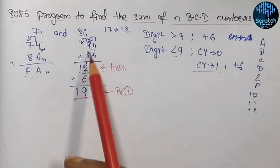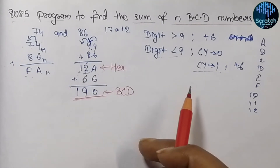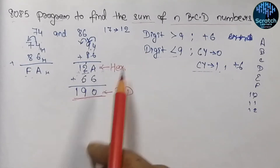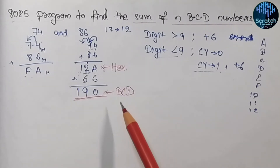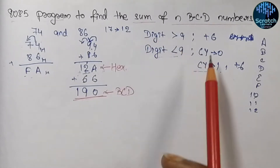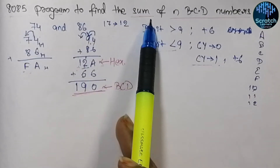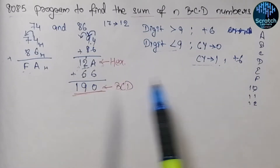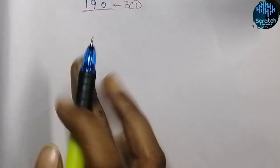In this way we can perform summation of two numbers in BCD format. In the 8085 microprocessor, by performing a single instruction we can convert the hexadecimal result into BCD format. Now we will write the 8085 program to find out the sum of N BCD numbers. If you understand this method, you can easily find the summation of two or three BCD numbers. I am writing the program for addition of five BCD numbers.